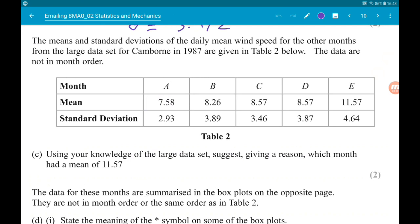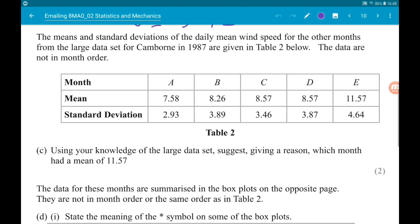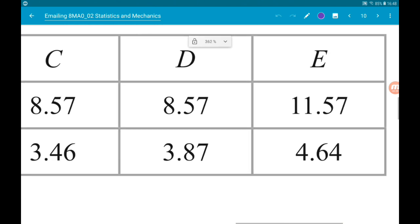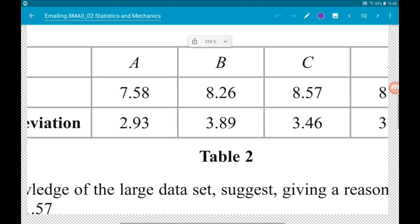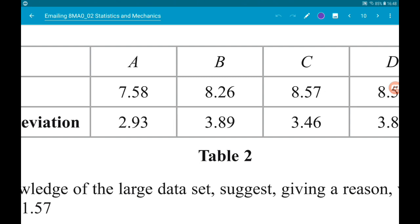Okay, next up. The mean and standard deviations of the daily mean wind speed for the other months from the large data set for Camborne in 1987 are given below in this table. The months are not in order. Part C says using your knowledge of the large data set, suggest giving a reason which month had a mean of 11.57.